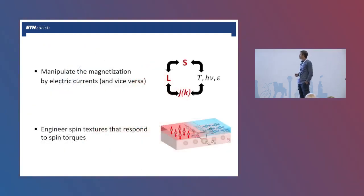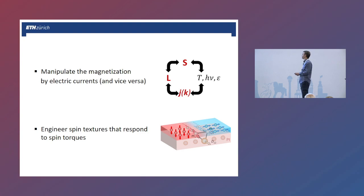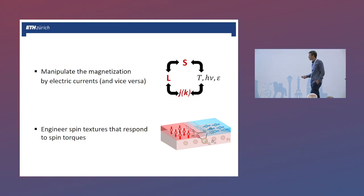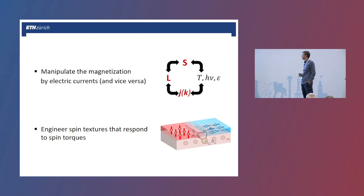What we are concerned with today is the fact that we can manipulate magnetization using spin currents and orbital currents, which are generated by charge currents. This relationship between the three different types of currents is very interesting from a fundamental point of view. We'll see that there are spin textures that are actually better suited to respond to current-induced spin torques than others, so it is important to understand this and see how they can be manipulated.